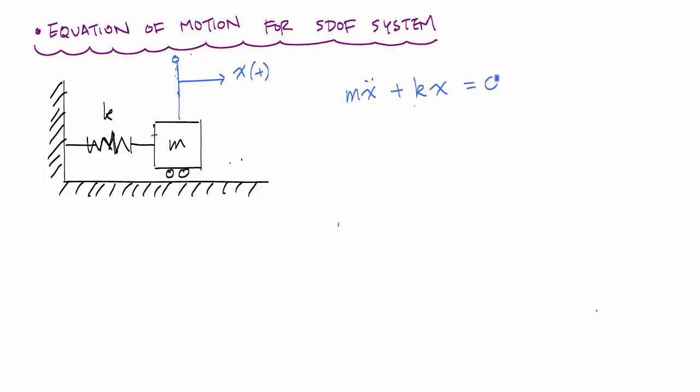The equation looks like m x double dot plus k x equals 0. X double dot indicates a second time derivative, so this is acceleration: d squared x over dt squared. All the positions are functions of time. M is the mass, K is the stiffness or spring constant.